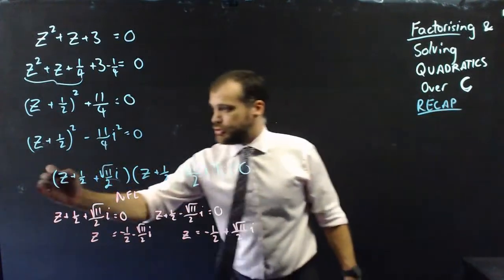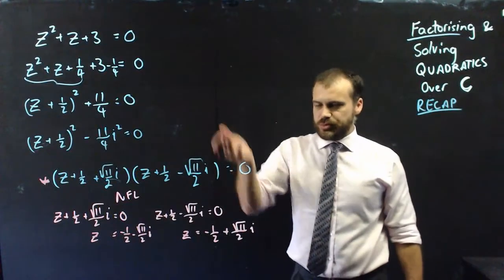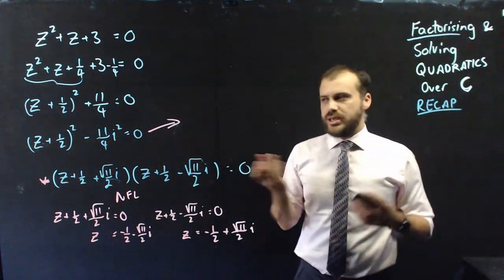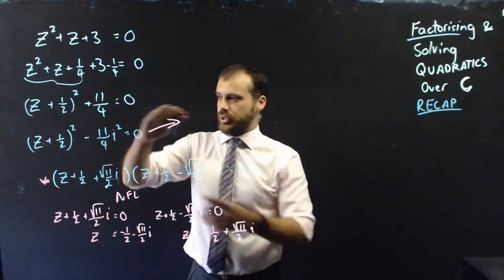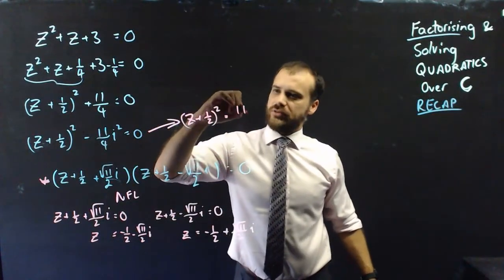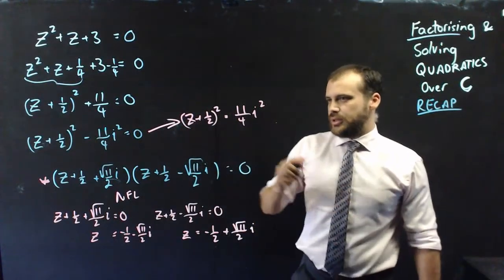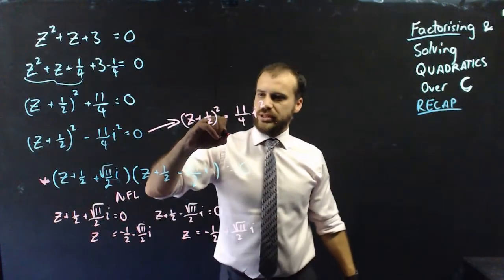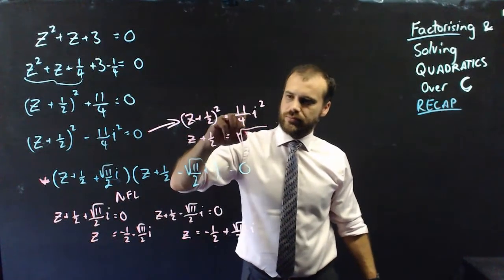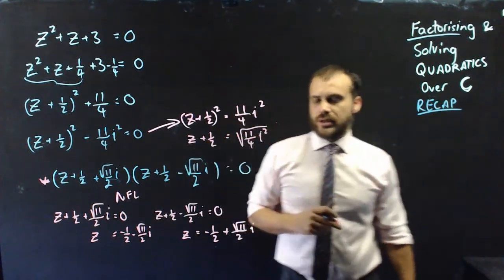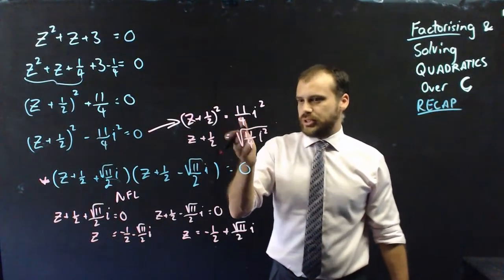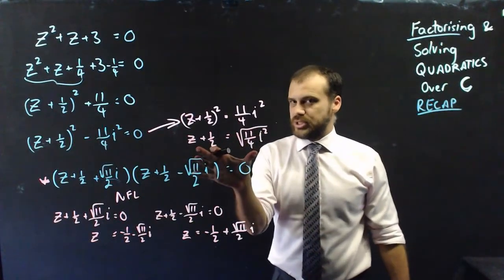It's important to note that if you weren't being asked to fully factorize, like I've done here, and you were just being asked to solve, you don't have to pass through that step. You can instead branch off and work from here. And we can just start rearranging and solving from that point. So we could say (z + ½)² = +11/4 i². And then we can square root both sides. So that'll be z + ½ = √(11/4 i²). Now, what happens if you take the square root of i²? You'll get i. The square root of 11/4 is √11/2.